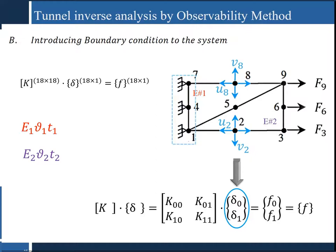The second step is about introducing boundary conditions to the system. In vector delta, the boundary conditions of nodes 1, 4, and 7 as well as measurements are defined. First, we have to establish the equilibrium equation for this finite element model. The global stiffness matrix contains mechanical parameters such as Young's modulus, thickness, and Poisson's ratio. The displacement vector defines the boundary conditions, and the right side of the equation is the vector of forces.